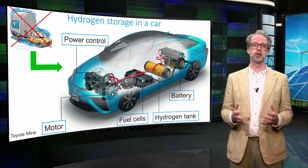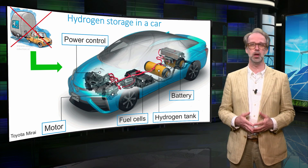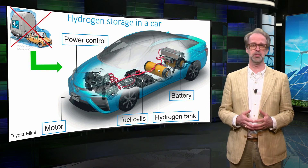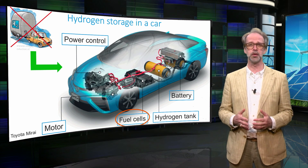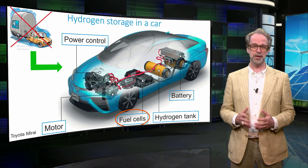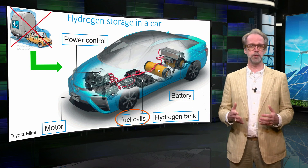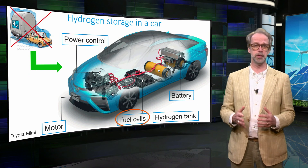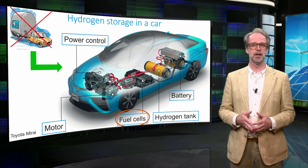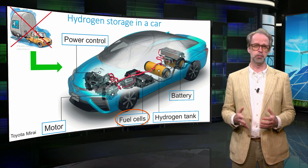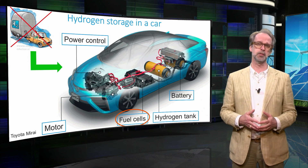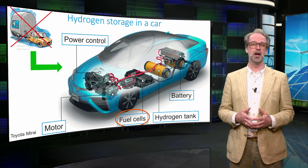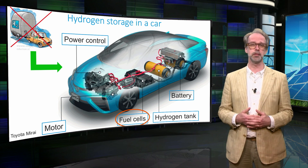Such a carbon fiber tank is for example built into a Toyota Mirai, which runs on hydrogen. In this case the hydrogen is not burned but converted to electricity in a so-called fuel cell. Hence it is in fact an electric car. However, the small battery you see is only needed to store energy during regenerative braking. In the long run, electric cars will probably be powered both by batteries and hydrogen. The high energy density of hydrogen, as compared to batteries, allows larger cars to have a larger driving range.